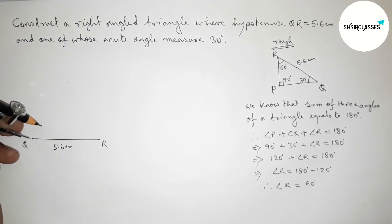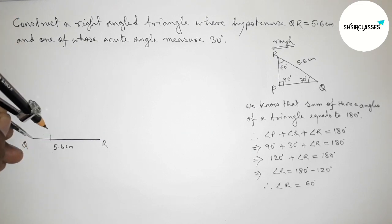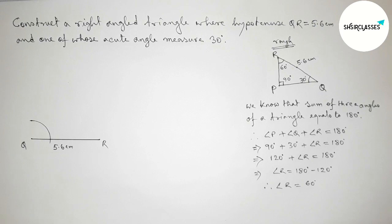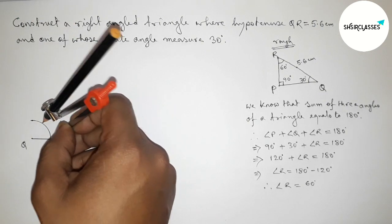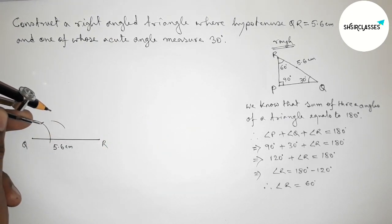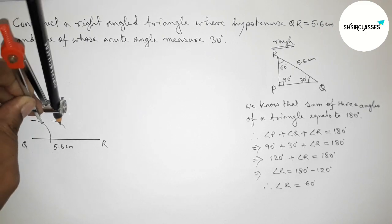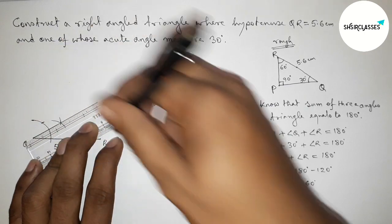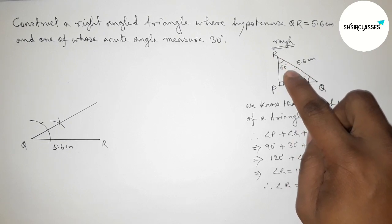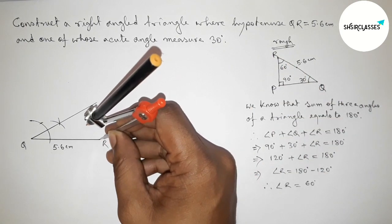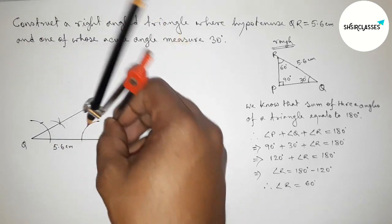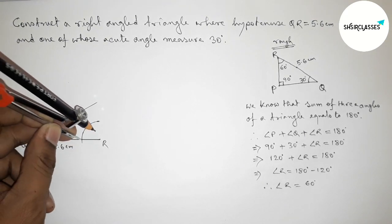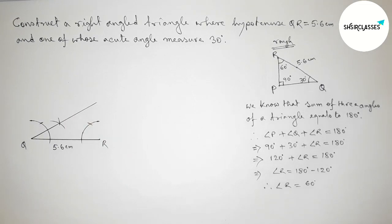Next, we draw a 30-degree angle at point Q using a compass. Placing the compass at Q, drawing an arc, then marking equal lengths to construct the 30-degree angle. Similarly, at point R, we construct a 60-degree angle using the compass with the same method — drawing arcs and joining the line. Both lines meet at point P.